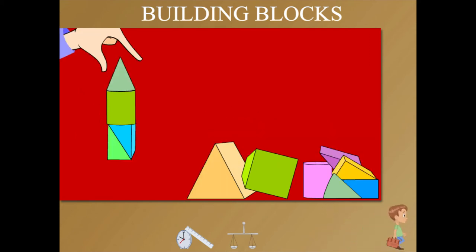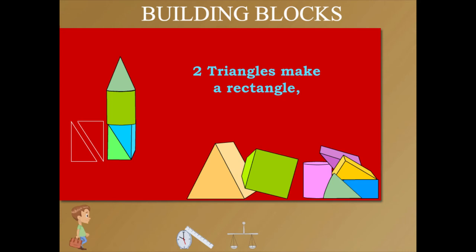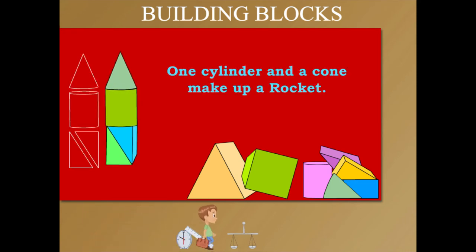Two triangular blocks make a rectangular block. On this, one cylinder and a cone make up a rocket.